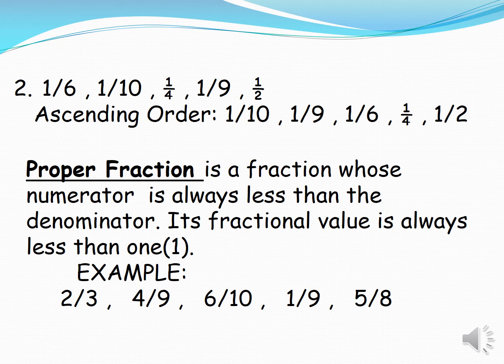Proper fraction is a fraction whose numerator is always less than the denominator. Examples: two thirds, four ninths, six tenths, one ninth, five eighths.